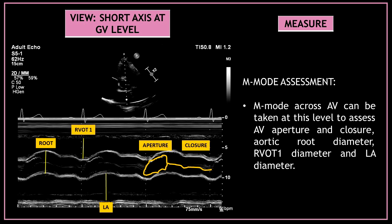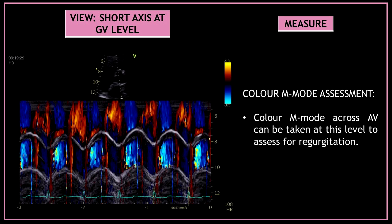M-mode across the aortic valve can be taken at this level to assess the aortic valve aperture and closure, the aortic root diameter, the right ventricular outflow tract diameter, and the left atrial diameter. You can also perform a color M-mode assessment across the aortic valve to assess for regurgitation.